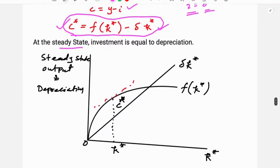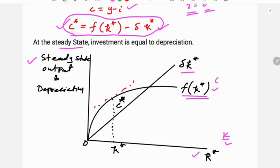Diagrammatically, the x-axis shows small k star, which is the capital-labor ratio, and the y-axis shows the steady state level of output or depreciation. The 45-degree line represents delta times k star, which is the depreciation. The curve f(k*) represents output. Consumption is a function of output, and output is a function of the capital-labor ratio, giving us the consumption function.